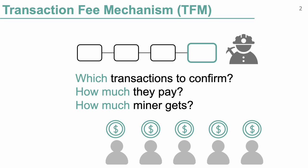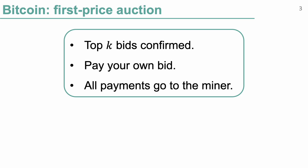As a heads up, for transaction fee mechanisms, it is not necessarily the case that all payments go to the miner. Some or even all of the payment can be burned, and we will see many such examples later. For example, Bitcoin employs a very simple first-price auction. If the block size is K, so we can confirm at most K bids, the K highest bids are confirmed and they each pay their own bid. All payments go to the miner.